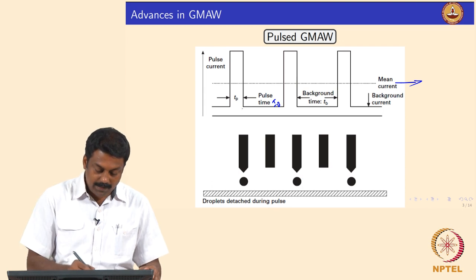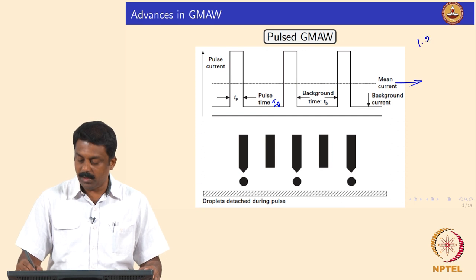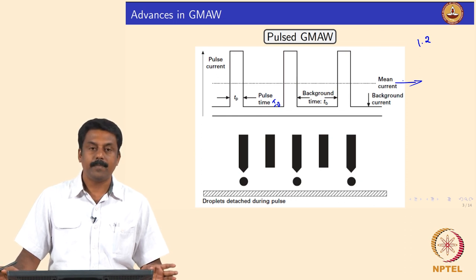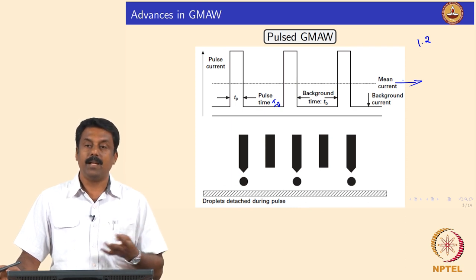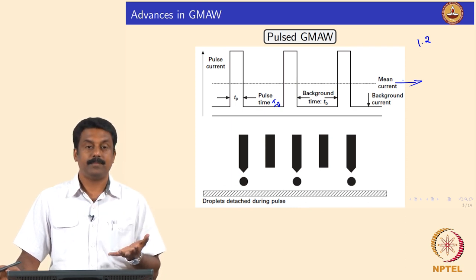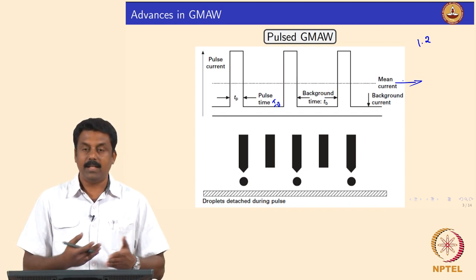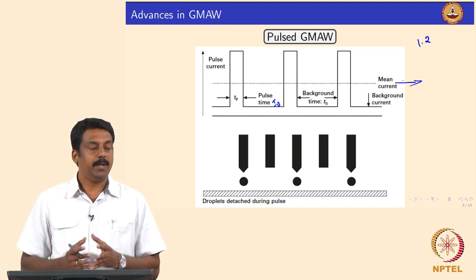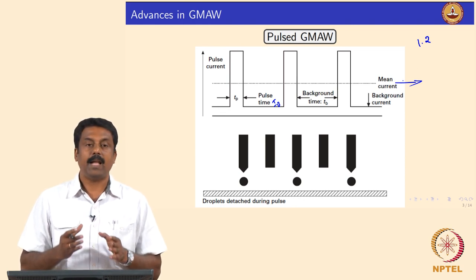By doing this, the total average I_mean decreases significantly. For example, for 1.2 mm carbon steel, if you achieve a drop spray transfer at about 200 amperes in constant current GMAW, you could achieve the same transfer characteristics by pulsing at an average as low as 70 amperes. So I_mean can be as low as 70 amperes by playing around with IP, IB, peak time TP, and background time TB.